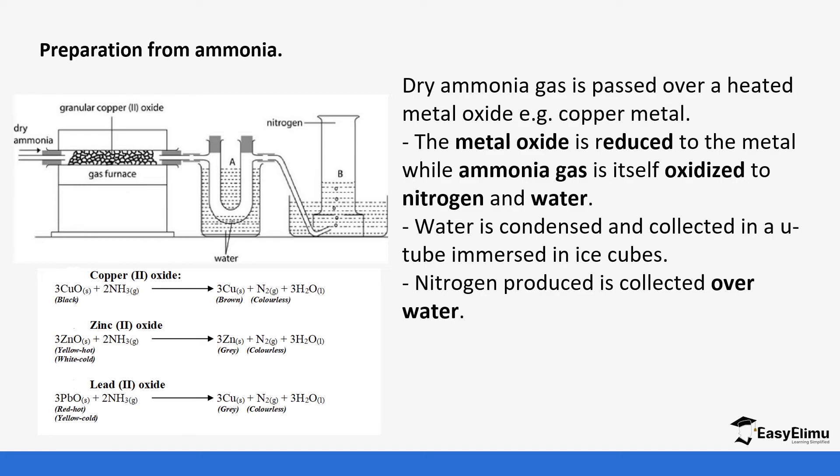If you look at the equation, ammonia can also react with other oxides like zinc 2 oxide and lead 2 oxide. You'll notice you are going to repeat this experiment or this discussion again when you come to the chemical properties of ammonia, but this is also to remind you that nitrogen can be obtained by this method apart from the other methods we mentioned previously.